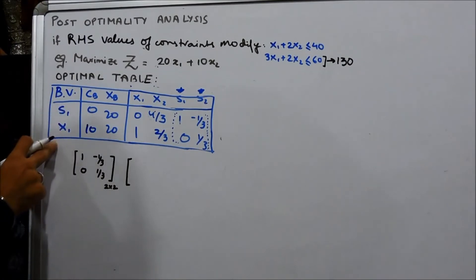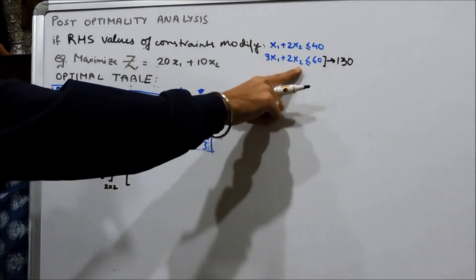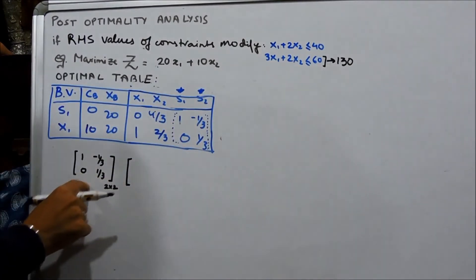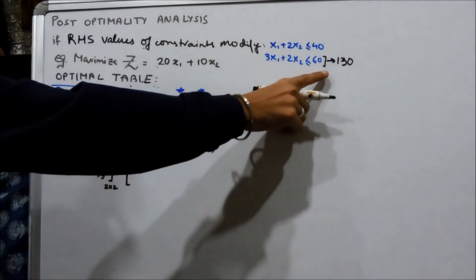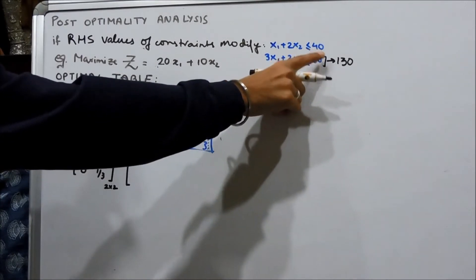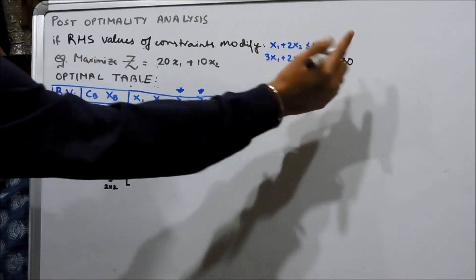After we have obtained the optimal solution based on these constraints, we take the optimal inverse and multiply it with the column vector containing this 40 which is as it is.